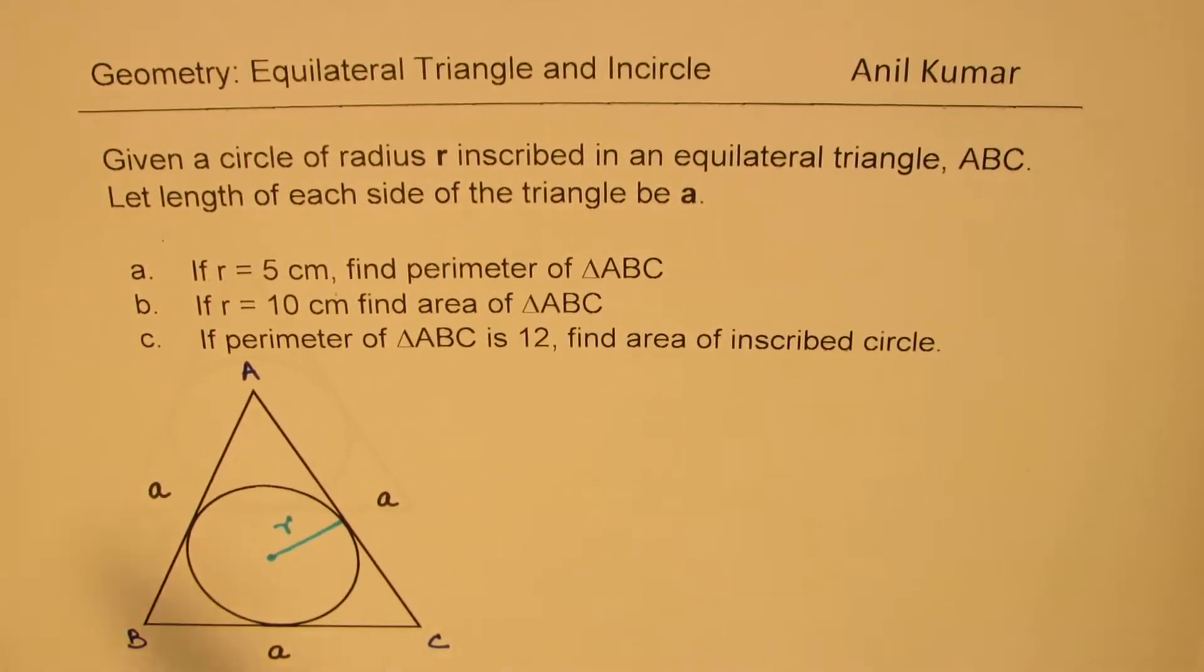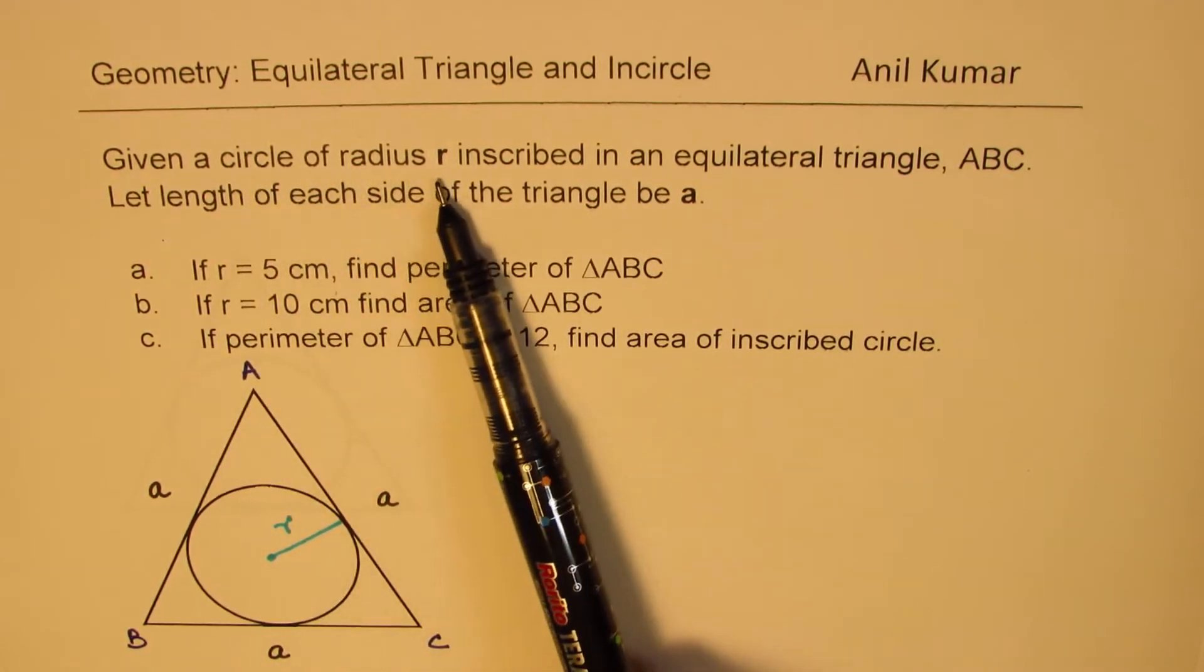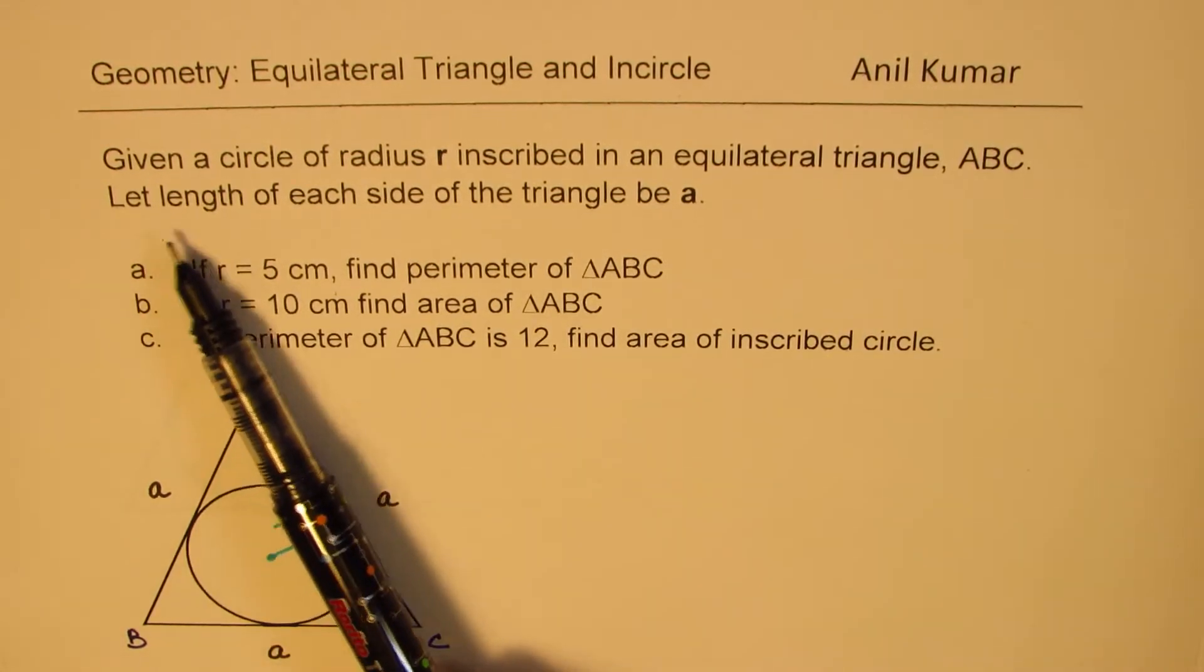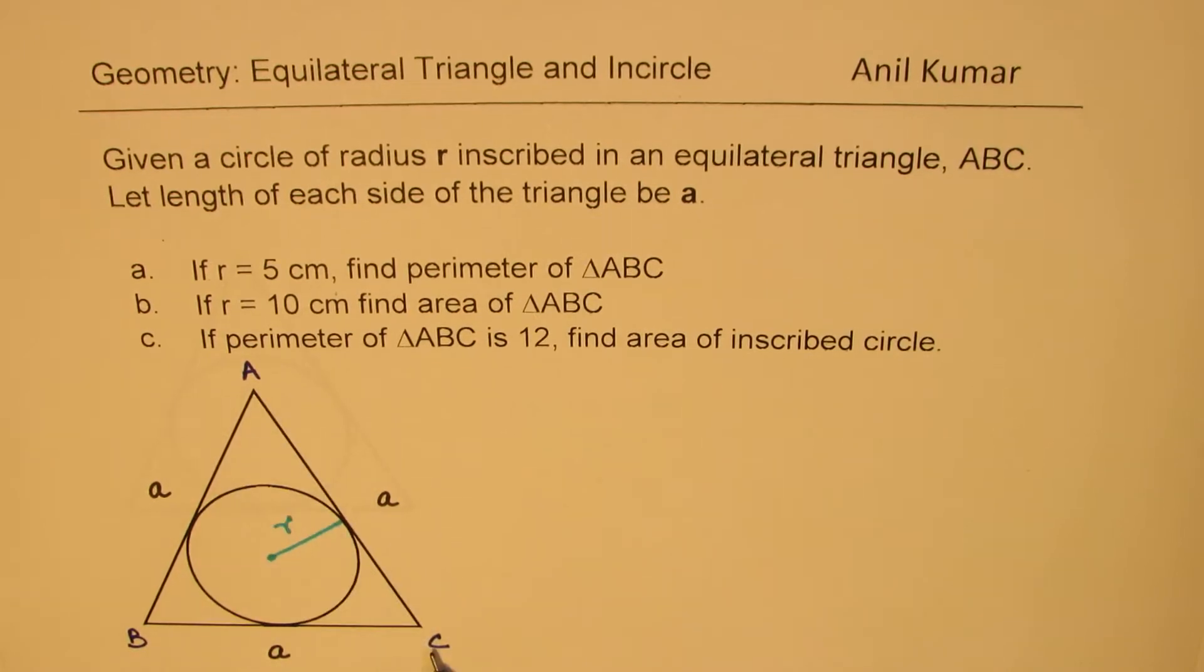We'll begin with a general case: given a circle of radius r inscribed in an equilateral triangle ABC, let the length of each side be a. Based on this, we've seen many questions in test papers.